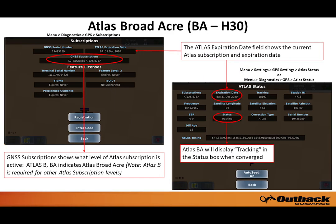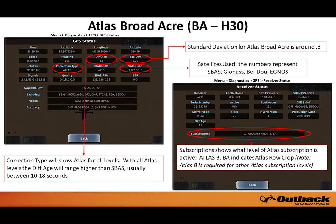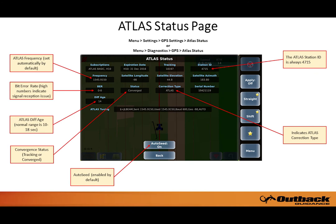Once the correction type has been switched to Broadacre, there are several screens which provide detailed information about Atlas. This image shows the Atlas Subscriptions and Atlas Status pages — how to find these is noted above each screenshot. Note the Subscriptions field shows both Atlas B and BA: Atlas B is Basic, which is required for all Atlas subscription levels, and BA is Broadacre. This slide also shows the GPS Status and Receiver Status pages, both of which provide useful information about the GPS signal.